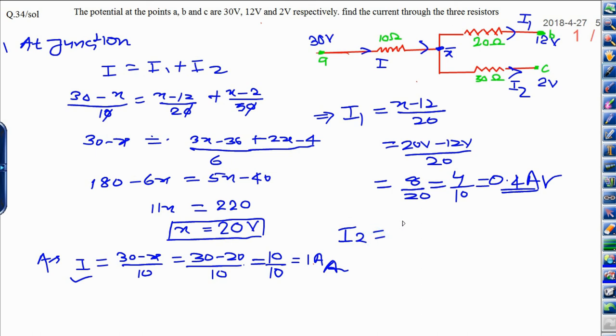Similarly I2 can be written as, I2 is X minus 2 upon 30. X is 20 minus 2 upon 30 and finally that will be 18 upon 30. And answer can be written as, divided by 6, 18 by 6 is 3 and 30 by 6 is 5, and answer will be 0.6 ampere, this is the current flow in each part of the circuit.